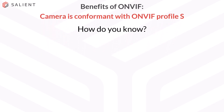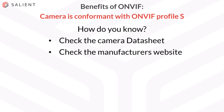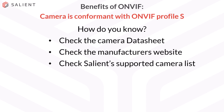There are a few ways you can check for ONVIF conformance. First, you can look at the camera data sheet. You can visit the manufacturer's website and look for ONVIF compliance there. You can check Salient's supported camera list from the Salient website and see if your camera appears in our list. And finally, you can visit ONVIF.org where you can check for conformance for any camera and any device.